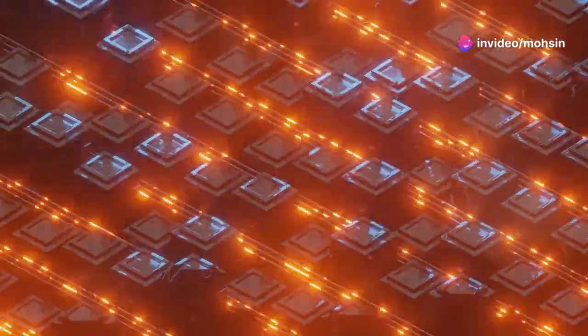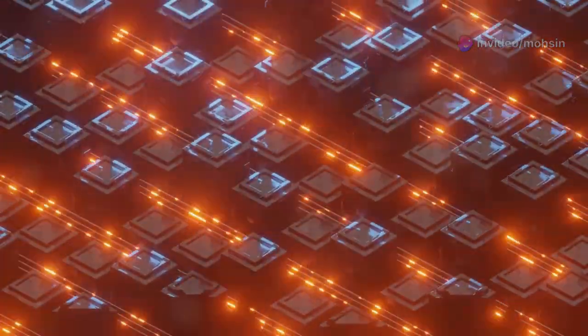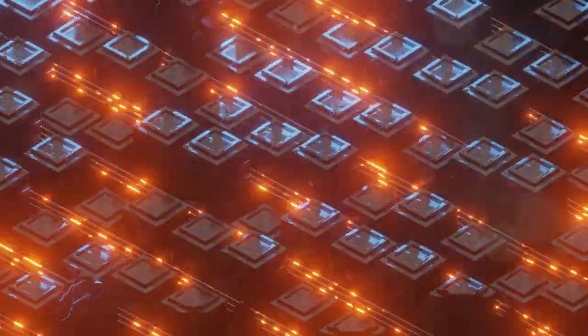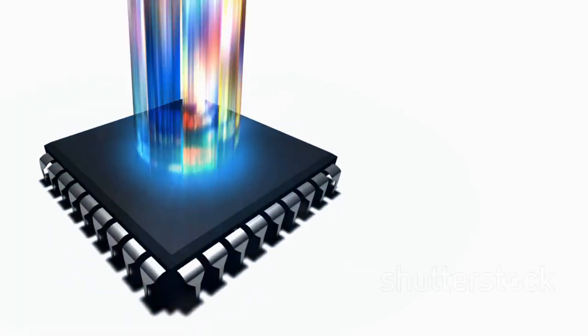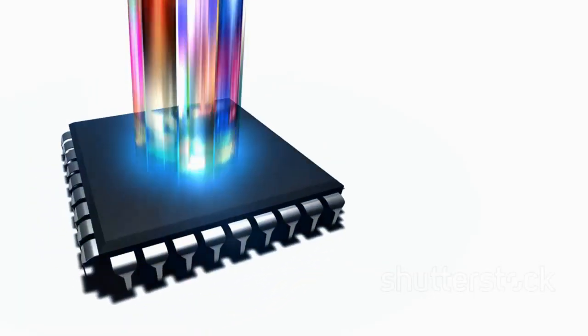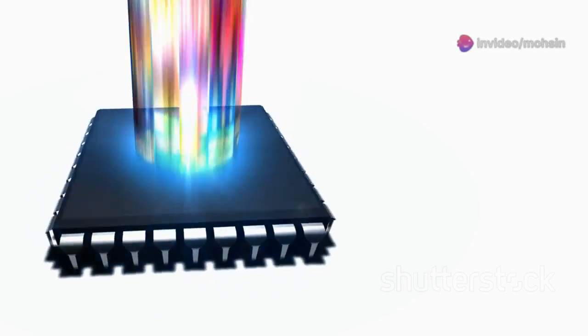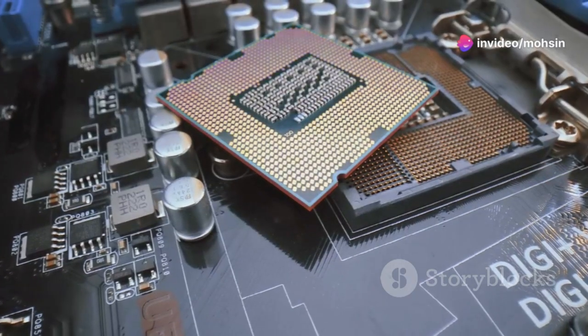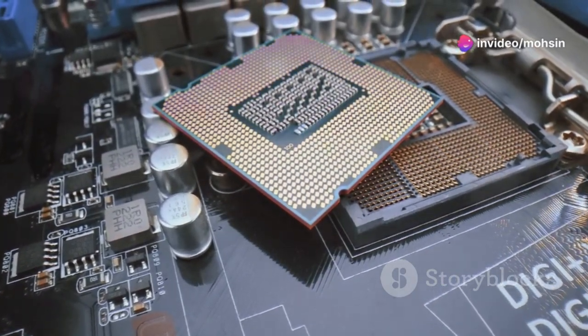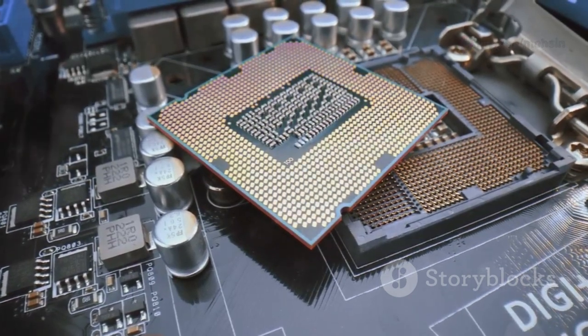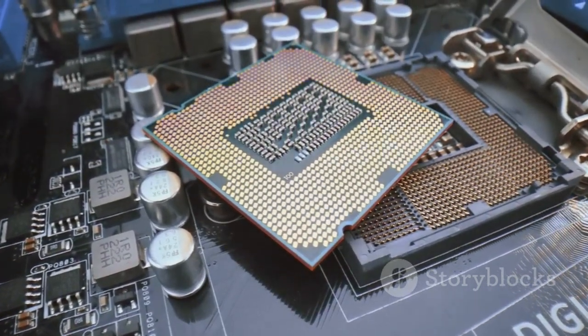Traditional chips rely on electrons flowing through billions of tiny transistors, switching on and off to process data. The Meteor One, on the other hand, uses photons, tiny particles of light, to process information at incredible speeds. This radical shift required a complete redesign of the chip's architecture, rethinking everything from the ground up.